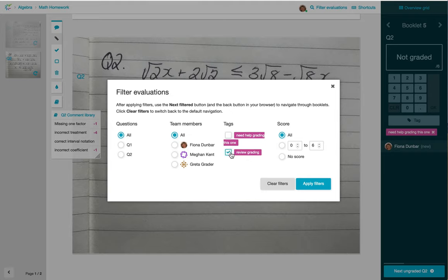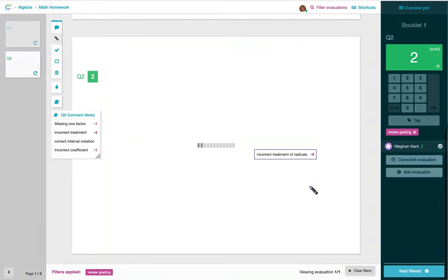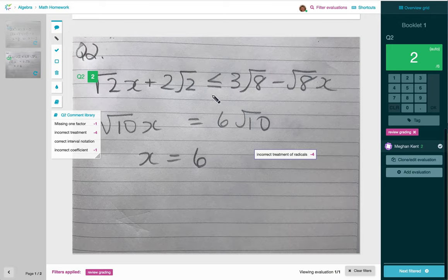For example, I could click on the tag Review Grading, apply the filter, and check one that my grading team wants me to review.